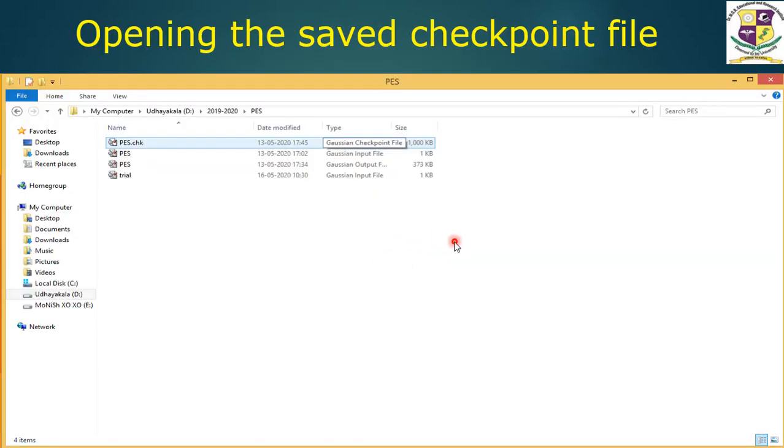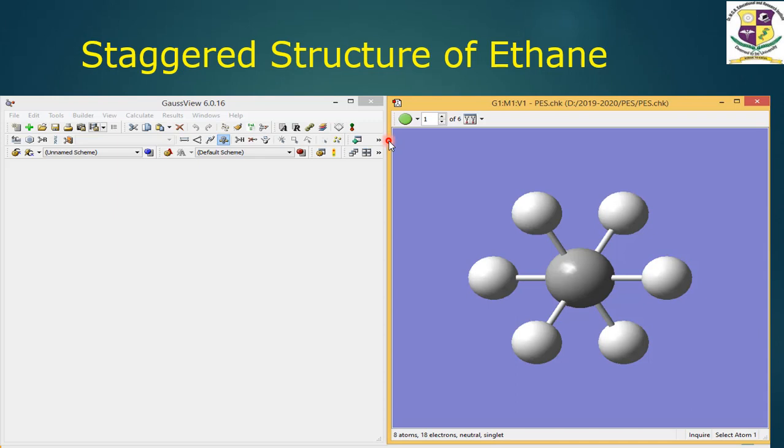Once job is submitted, the Gaussian calculation setup runs and it gets saved in the folder. Now you can click the Gaussian checkpoint file. It ends up with the staggered structure of ethane.